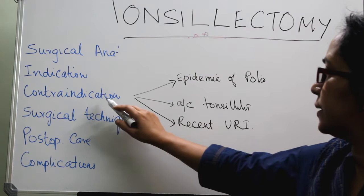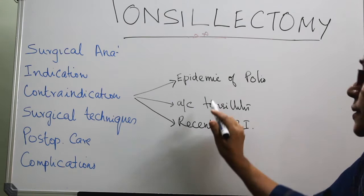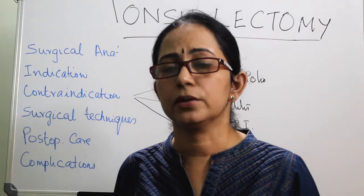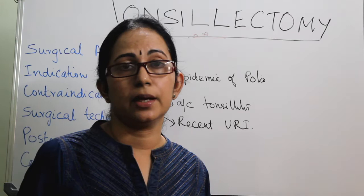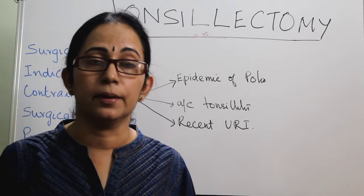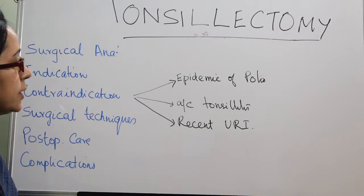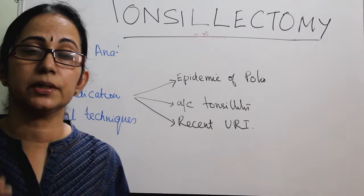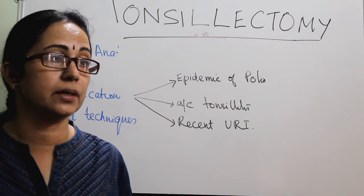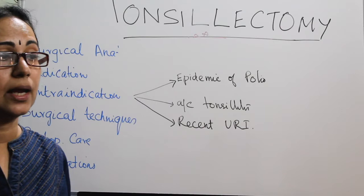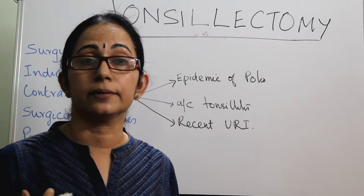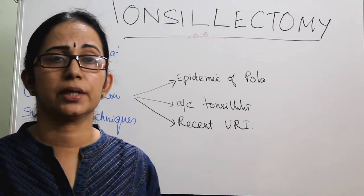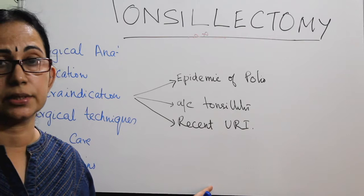Contraindications: absolute contraindications include epidemic of poliomyelitis — because during an epidemic, polio virus concentrates in the lymphoid tissue, and tonsillectomy would disseminate the virus into the bloodstream causing paralytic polio. Acute tonsillitis and recent upper respiratory infection are also absolute contraindications — a minimum of three weeks must be allowed. Relative contraindications include hemoglobin less than 10 g%, uncontrolled diabetes, hypertension, and other systemic conditions.